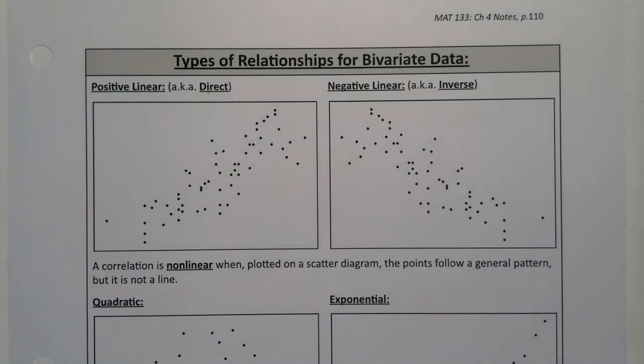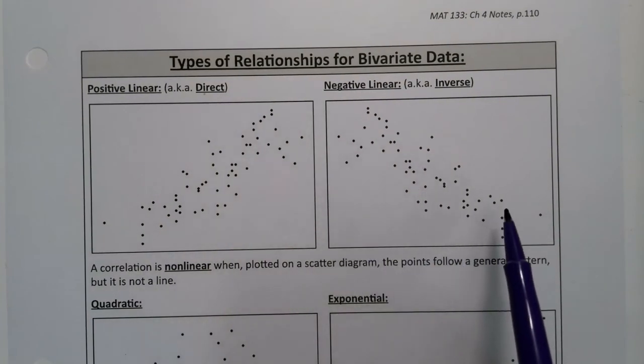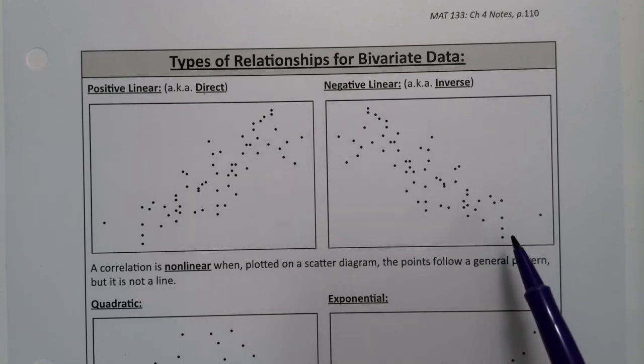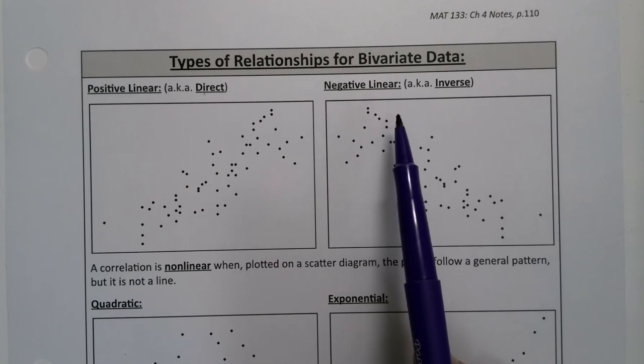We touched on negative relationships in the last example, but we want to explore the different types of relationships that are available to us for bivariate data. So we saw a negative relationship, right? As x increases, as we move to the right on the graph, the y decreases. That's a negative linear relationship.